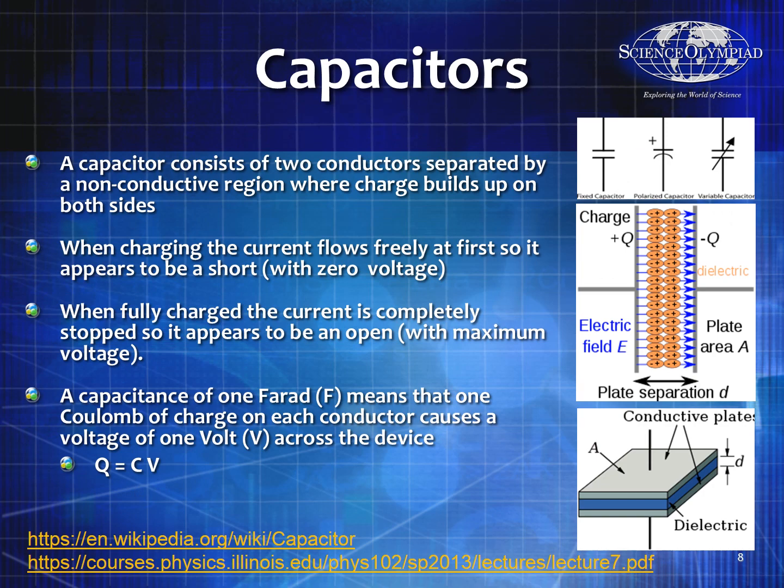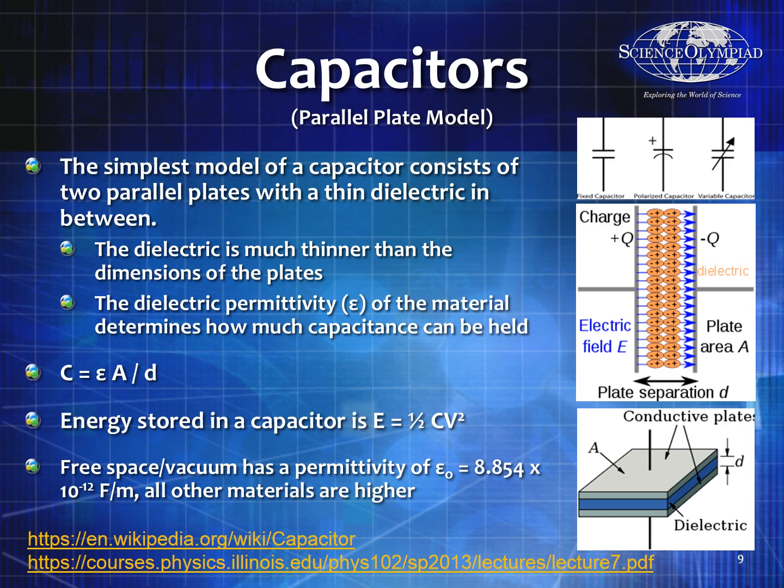On a capacitor, all the positive charges collect on one side and all the negative charges on the other. The simplest model is two parallel plates with area A and a very small distance D between them. The dielectric — a non-conductive material — has a permittivity epsilon, and capacitance equals epsilon times area divided by distance. The energy stored in the capacitor is equal to one-half C times V squared.